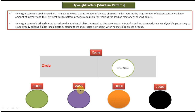Similarly, if I want to create 90,000 blue color circle objects, I would just get the circle object from the hash and fill the blue color. Like that I can create as many circle objects as I want.